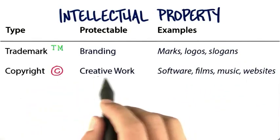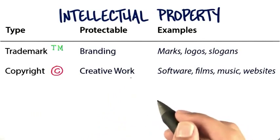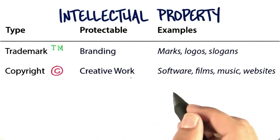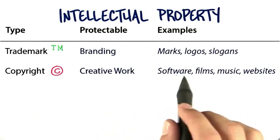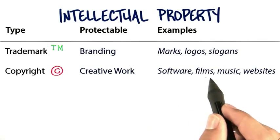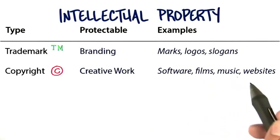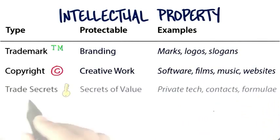Another type of intellectual property is copyright. An example is creative or authored works and expressions. You can't copyright ideas, but you can copyright software, songs, movies, or website content.